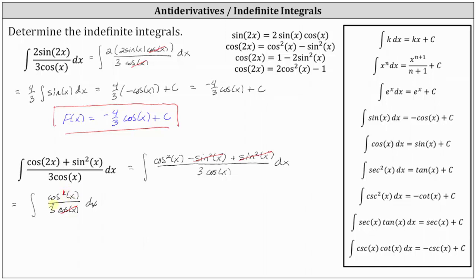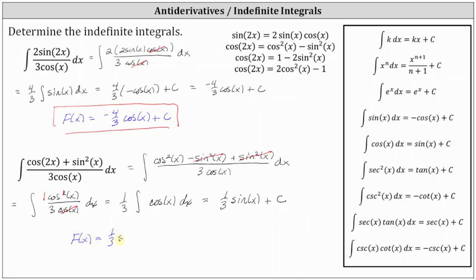Since the coefficient of cosine x in the numerator is one, we can factor out one third. The integral is equal to one third times the integral of cosine x dx. Since the integral of cosine x dx is equal to sine x plus c, in our case we have one third times sine x plus c as the indefinite integral or antiderivative. So big F of x is equal to one third sine x plus c.